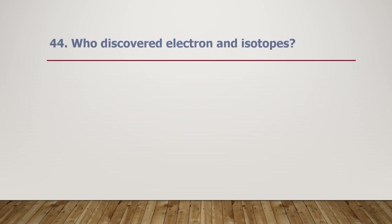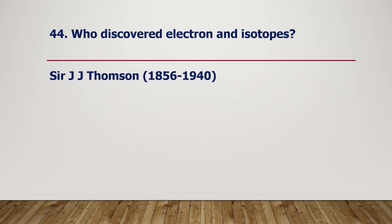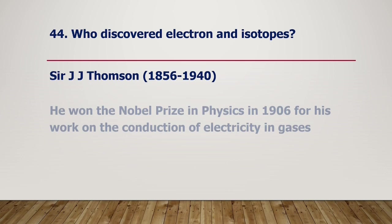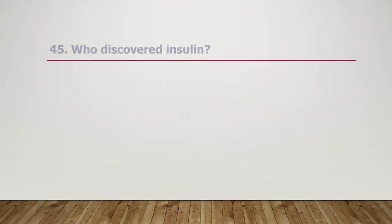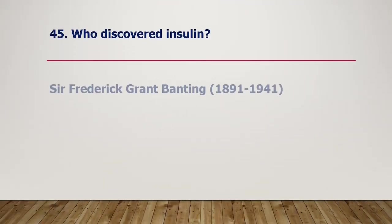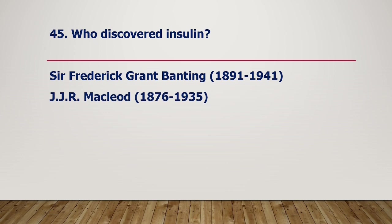Who discovered the electron and isotopes? Sir J.J. Thomson, 1856–1940. He won the Nobel Prize in Physics in 1906 for his work on the conduction of electricity in gases. Who discovered insulin? Sir Frederick Grant Banting, 1891–1941, and J.J.R. MacLeod, 1876–1935.